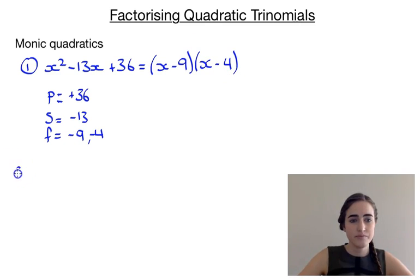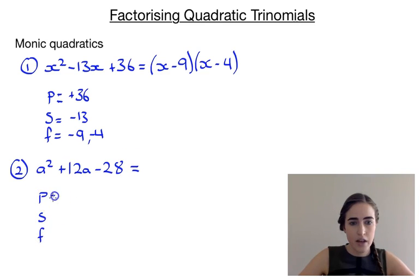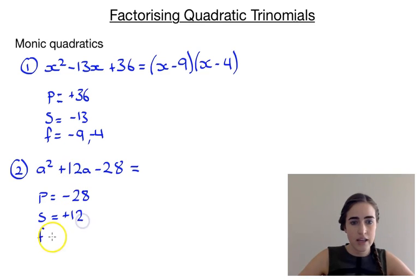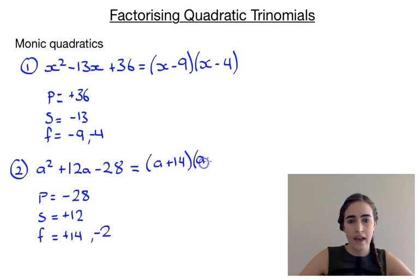Let's have a look at a second example: a squared plus 12a minus 28. Again we use PSF. Our product is going to be the constant term on the end, so minus 28. Our sum is going to be the coefficient of the middle term, so positive 12. We need two numbers that satisfy that — that's going to be positive 14 and negative 2. That gives us a product of minus 28 and a sum of positive 12. So it factorises to (a plus 14)(a minus 2).